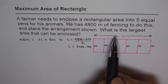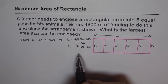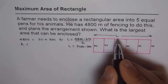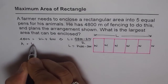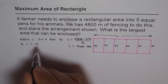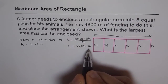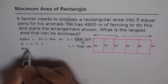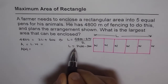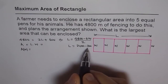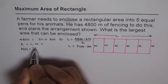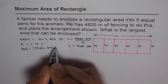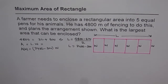Now we need to maximize the area. The area equation is length times width. Since we know length in terms of width, we write A(W) equals (2400 minus 3W) times W. That is the area equation in one variable W.